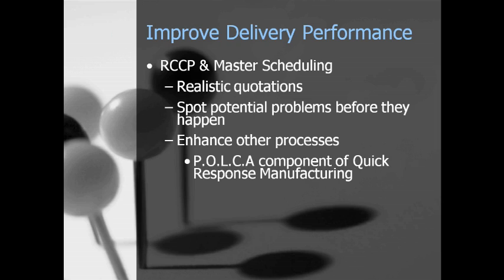The third point in how rough-cut capacity planning can enhance on-time delivery: if you've been following these webinars over the past six months, you've heard of our implementation of Paired Overlapping Cards with Authorization — a component of Suri's Quick Response Manufacturing. Getting a better handle on jobs before they enter the system will allow us to better utilize the POLCA system, which controls the movement of material between work centers, helping us meet promised delivery dates at a higher percentage of the time.